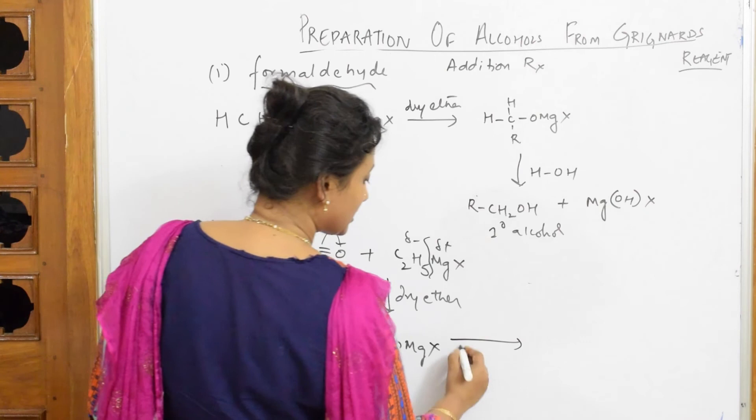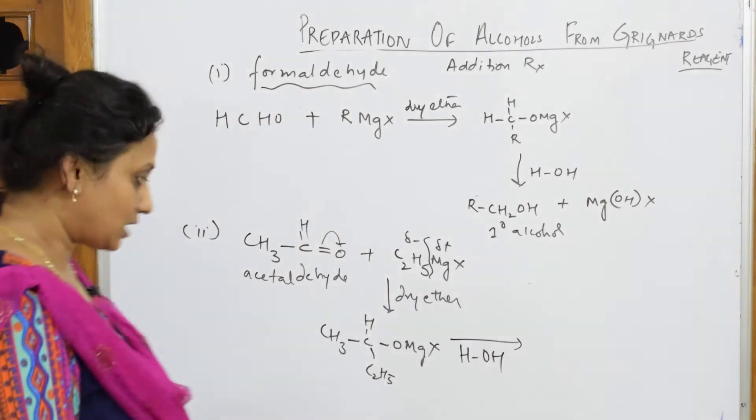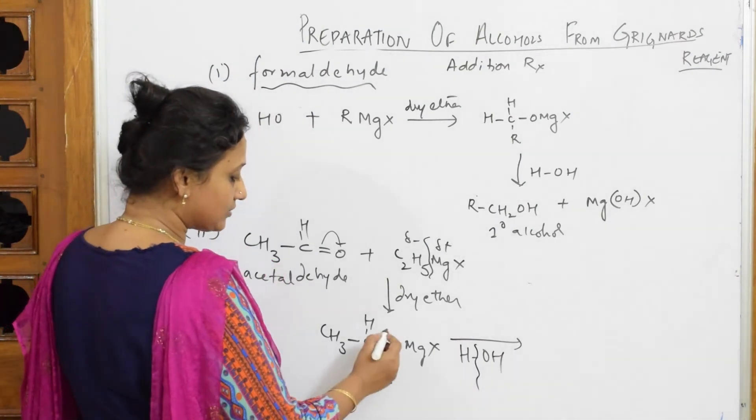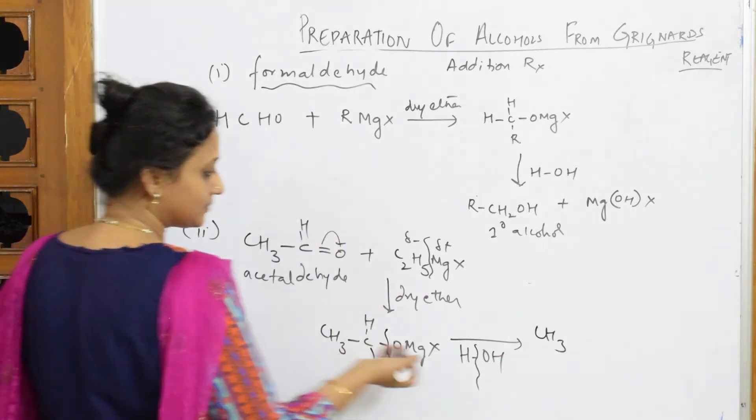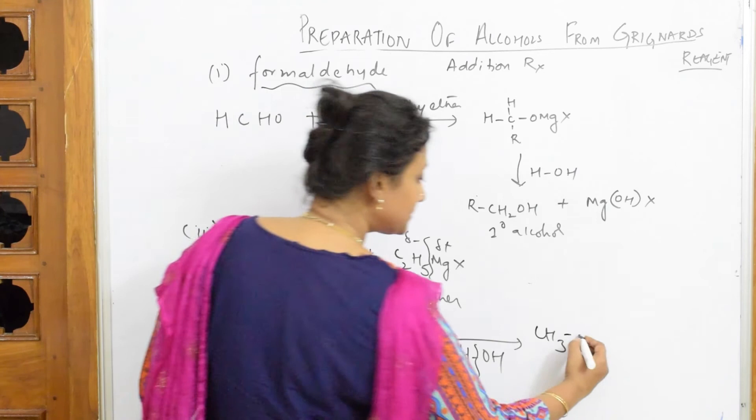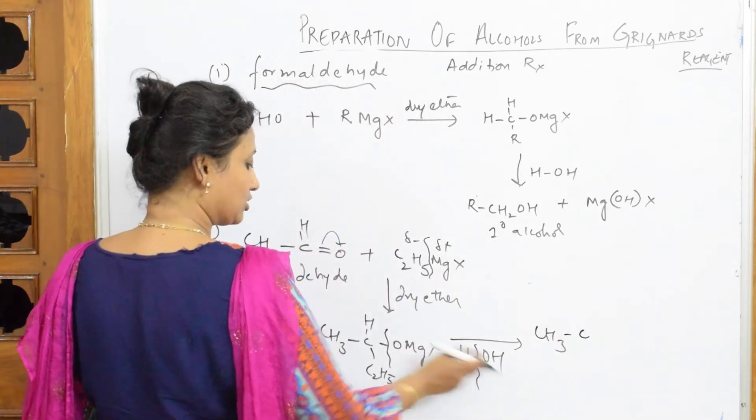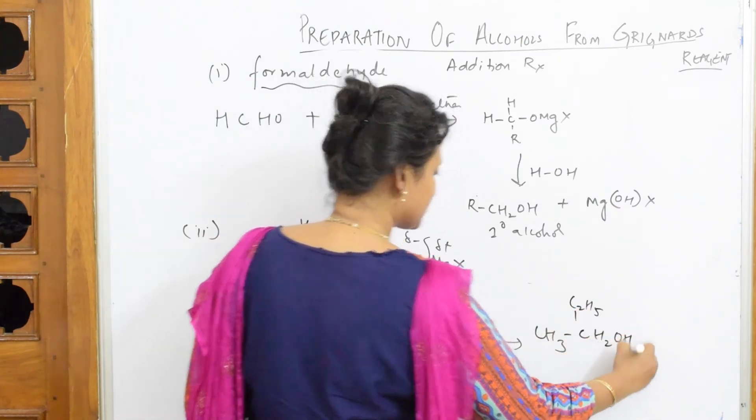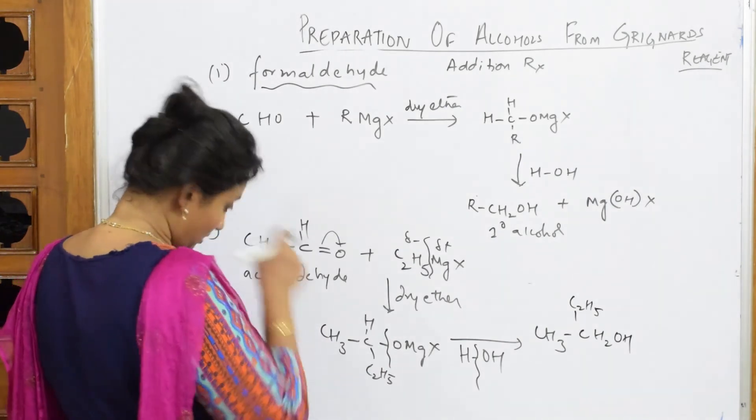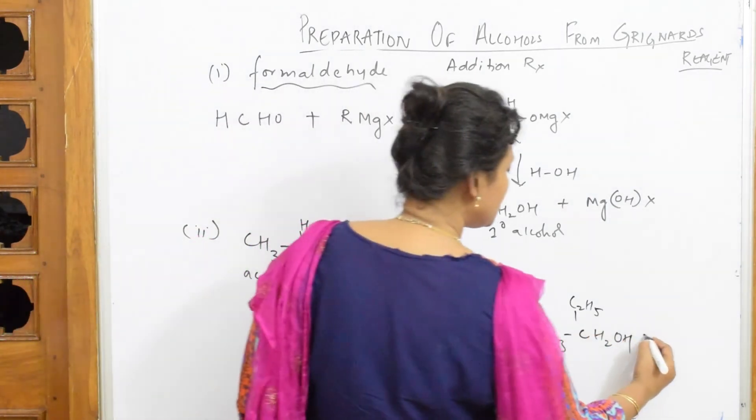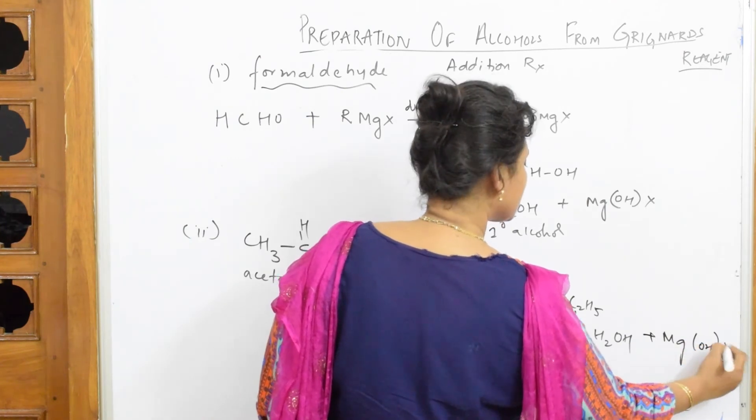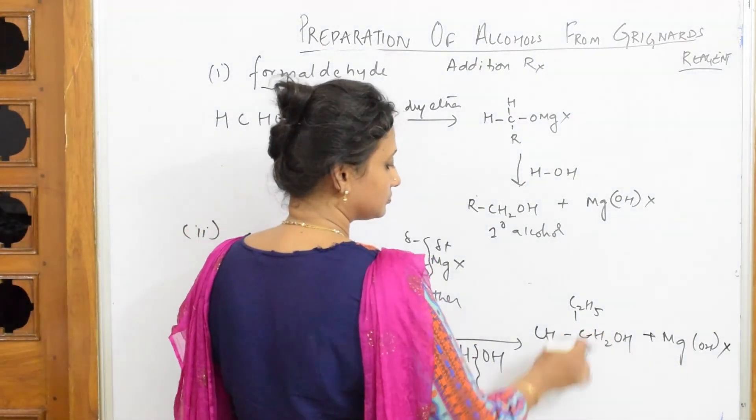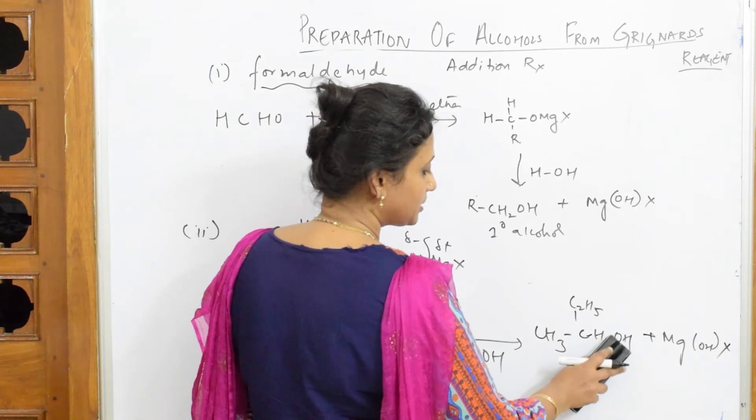So after hydrolyzing more, again there is a cleavage of bond here between H and OH. Again there is a cleavage of bond here. And I get CH3C, it is still here existing. Now this carbon, you have to get alcohol. C2H5 I am getting it above. CH2OH, this whole thing. And now what else is left? MgOHX.